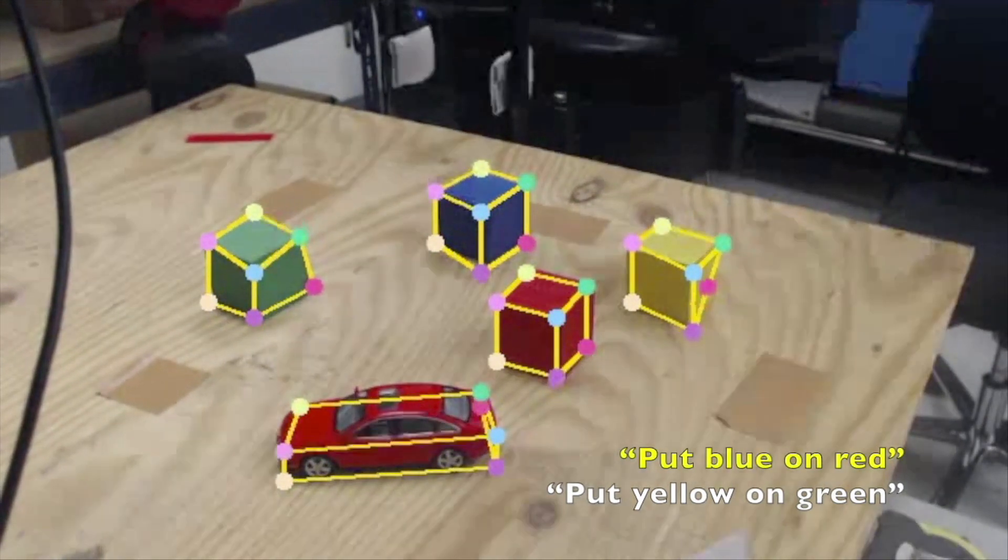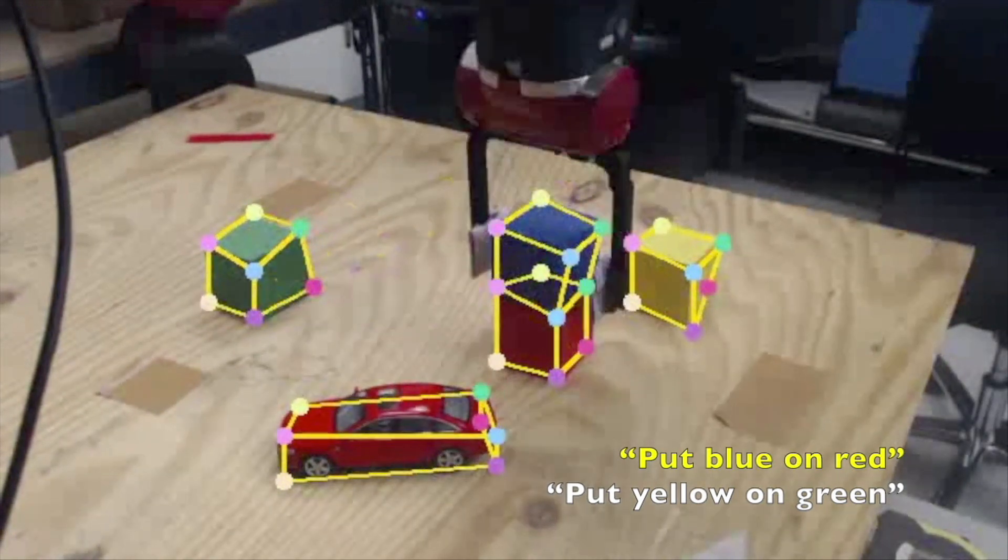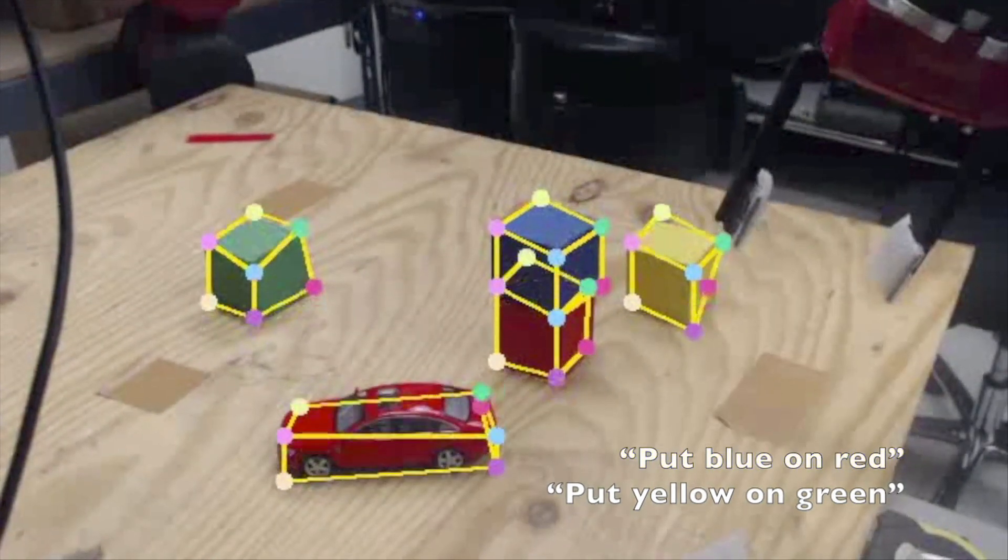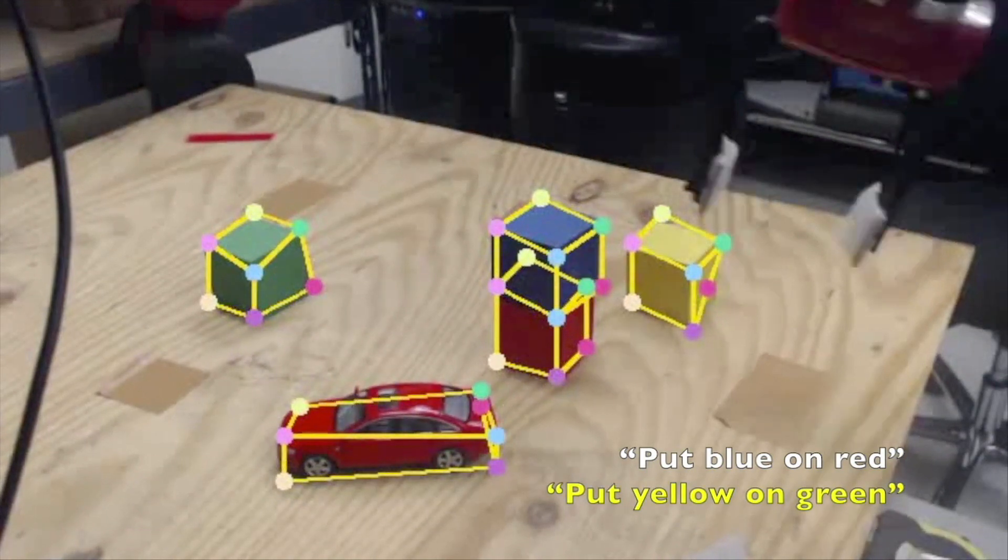During execution, after correctly placing the blue cube, the robot fails to place the yellow cube on the green cube due to an error in depth estimation.